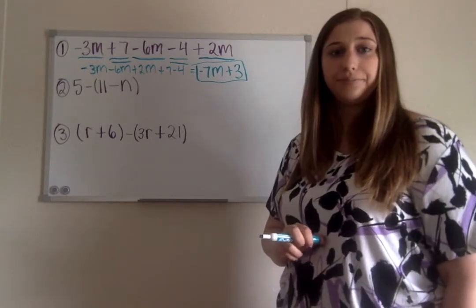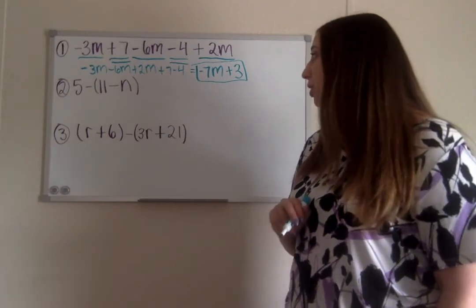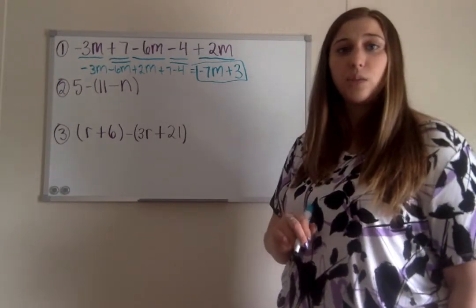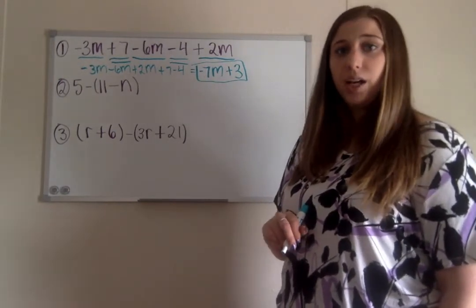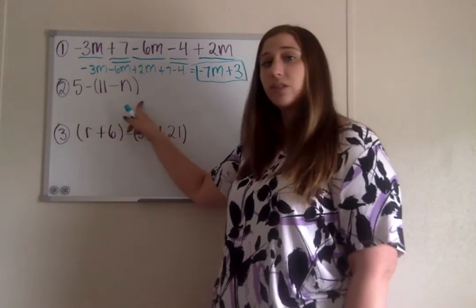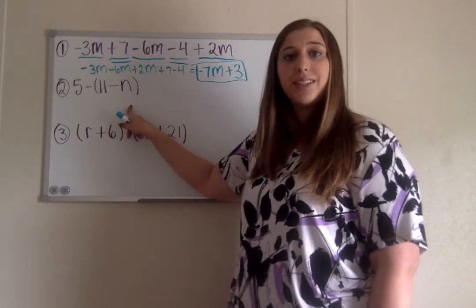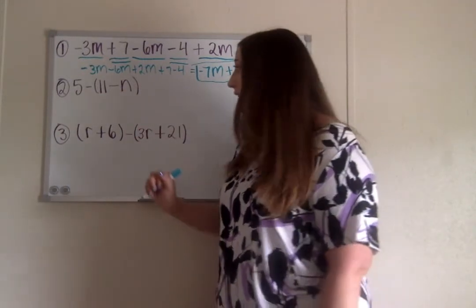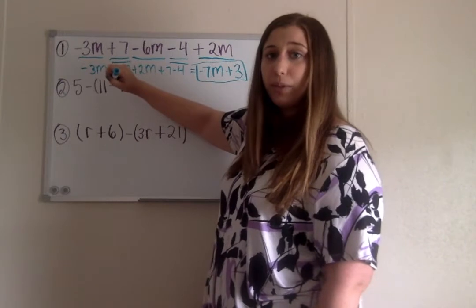All right, for number 2 we're still combining our like terms, we're still simplifying. But in order to simplify number 2, we have to get rid of these parentheses first. And remember, we get rid of parentheses by distributing.